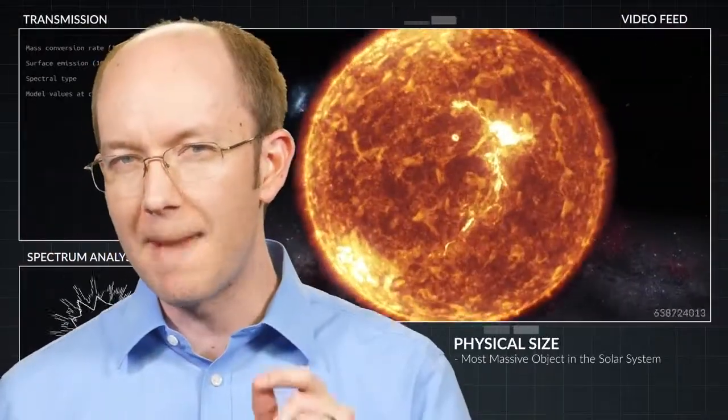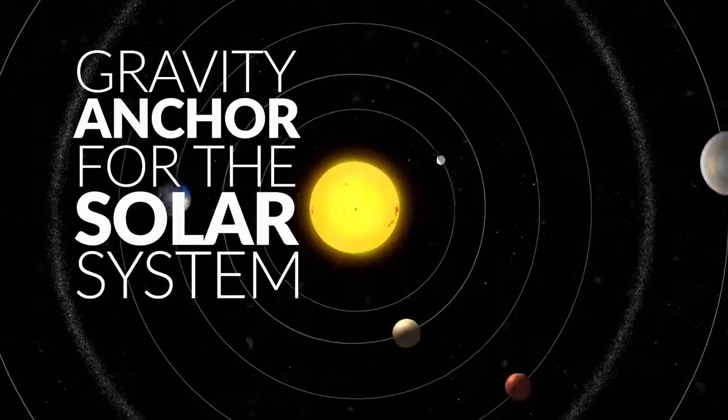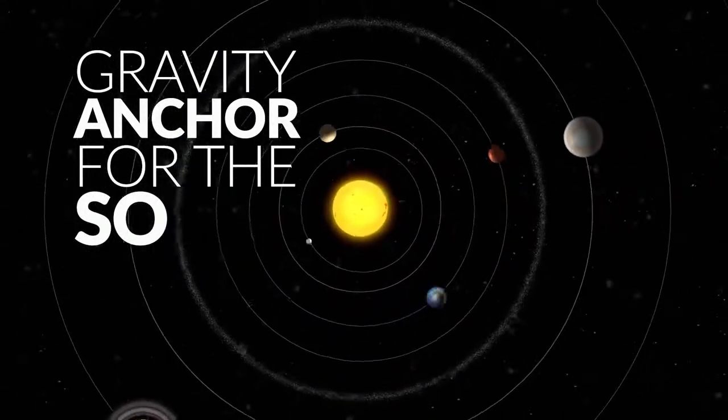Being the most massive object, the Sun acts as a gravity anchor, holding all the planets and dwarf planets and objects in their respective orbits.